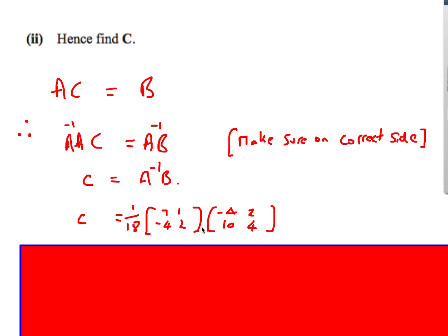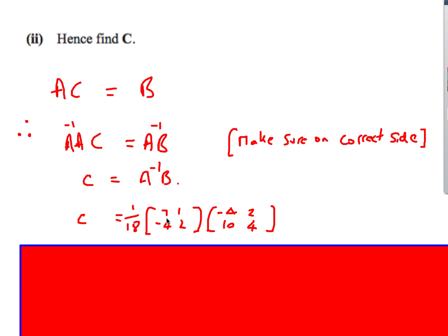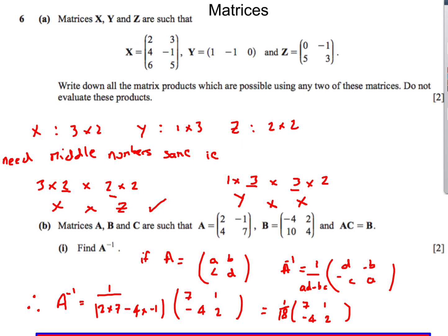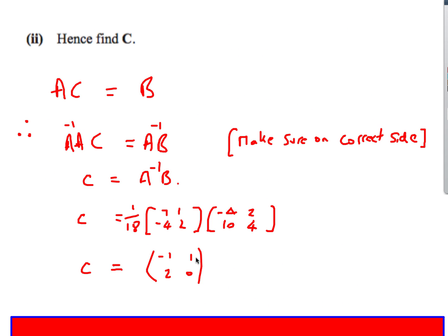So we multiply the inverse matrix (1/18)(7, 1, -4, 2) by matrix B (-4, 2, 10, 4). Doing row 1 times column 1: 7×(-4) + 1×10; row 1 times column 2: 7×2 + 1×4; row 2 times column 1: (-4)×(-4) + 2×10; and so on. After simplifying with the 1/18 factor, C equals (-1, 1, 2, 0).